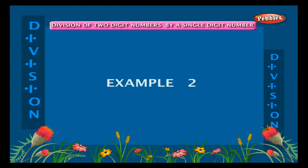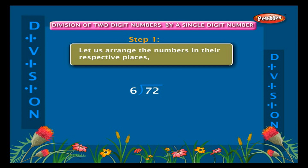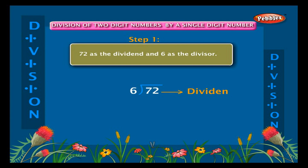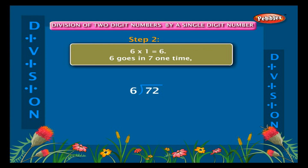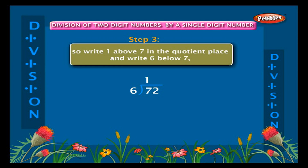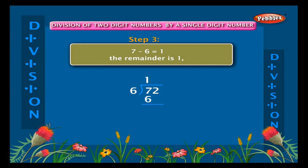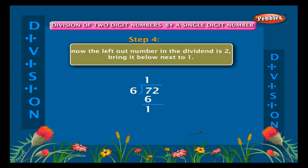Example two: divide 72 by 6. Let us arrange the numbers — 72 as the dividend and 6 as the divisor. Recite the multiplication tables of 6. Find out how many times 6 goes in 7: six into one is equal to six, so 6 goes in 7 one time. Write 1 above 7 in the quotient place and write 6 below 7. Seven minus six is equal to one — the remainder is 1. The left-out number in the dividend is 2; bring it down next to 1.